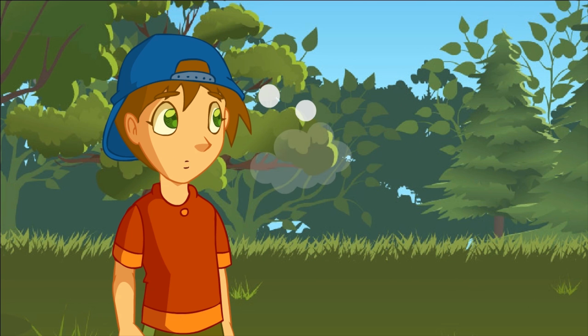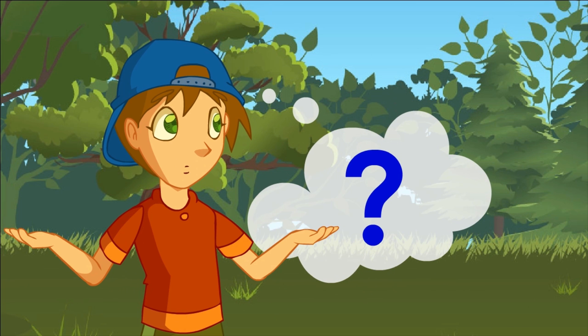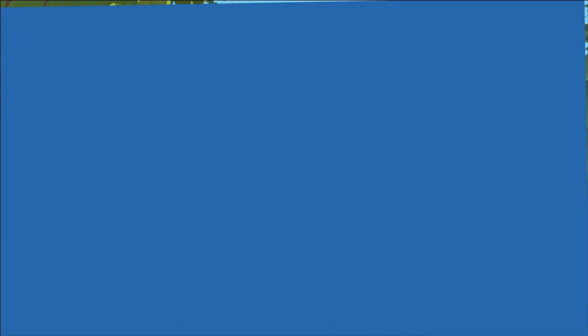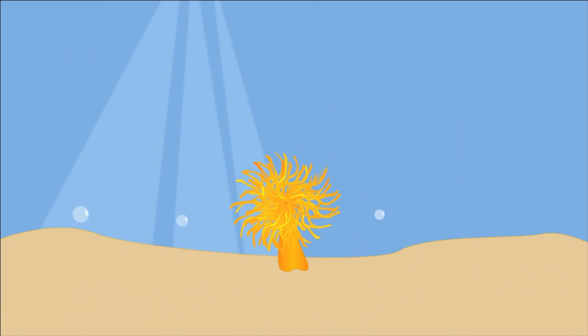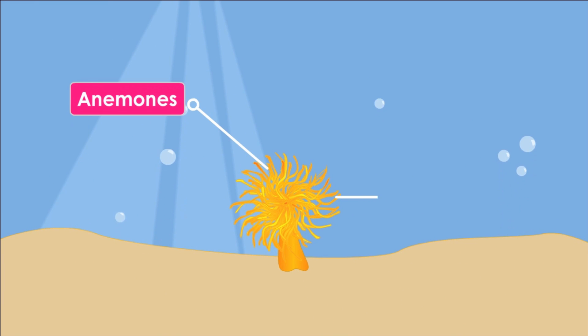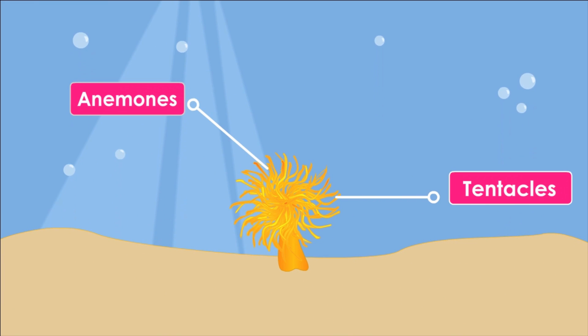Sea what? Sea anemones. Those are animals that live in the water and have got a cylindrical body with tentacles on the top.